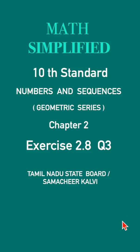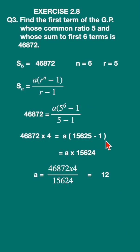Exercise 2.8, question 3. Click here for the full exercise. Find the first term of the GP whose common ratio is 5 and whose sum of the first 6 terms is 46872.